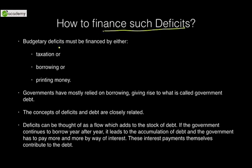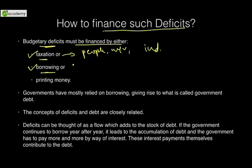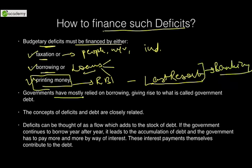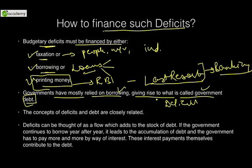How to finance such deficits? Budgetary deficits must be financed either through taxation — charged from citizens, manufacturers, and industrialists — or borrowing loans from RBI, citizens, and international organizations, or printing money. Printing money is in the hands of RBI and is the last resort — we will discuss why in the banking chapter. Governments have mostly relied on borrowing, giving rise to what is called government debt. If we keep on borrowing, it adds to government debt. The concepts of debts and deficits are closely related — in order to bridge the deficit, we are adding debt.